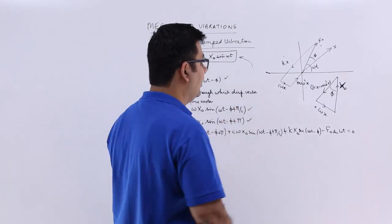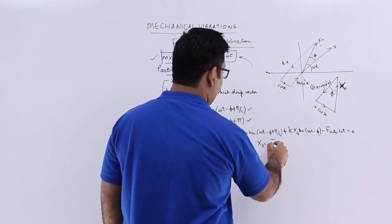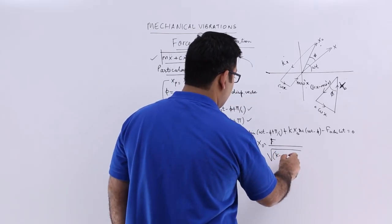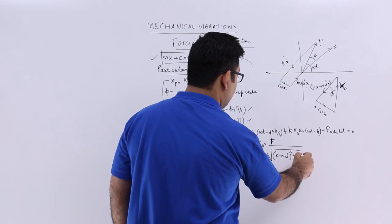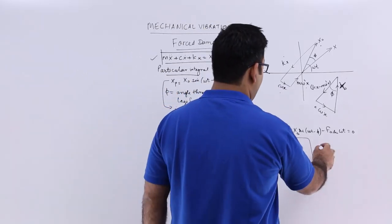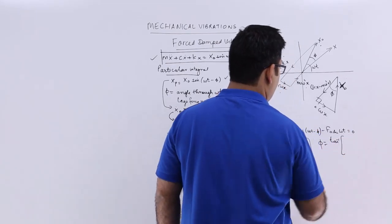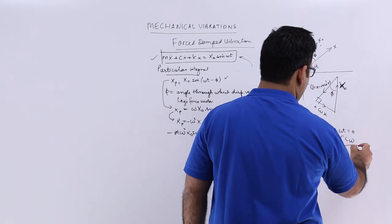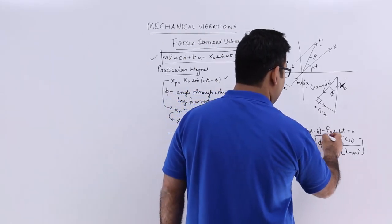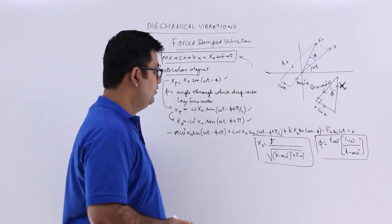From this triangle I can get the value of x0, which is: x0 = F / sqrt[(k - m*omega^2)^2 + (c*omega)^2]. And the value of phi is: phi = tan^(-1)[c*omega / (k - m*omega^2)]. These two expressions give you the amplitude x0 and the phase angle phi.